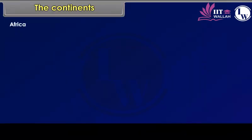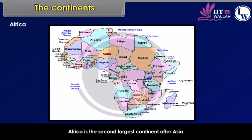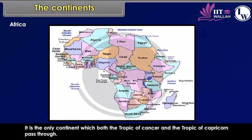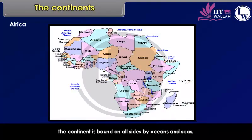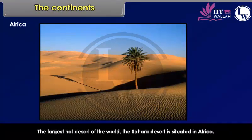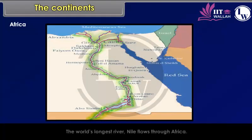Africa is the second-largest continent after Asia. The Equator runs almost through the middle of this continent. The wider part of Africa lies in the Northern Hemisphere. It is the only continent through which both the Tropic of Cancer and the Tropic of Capricorn pass. The continent is bound on all sides by oceans and seas. The largest hot desert of the world, the Sahara Desert, is situated in Africa. The world's longest river, the Nile, flows through Africa.